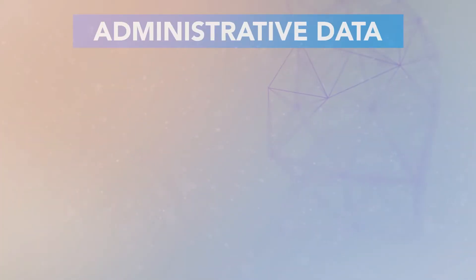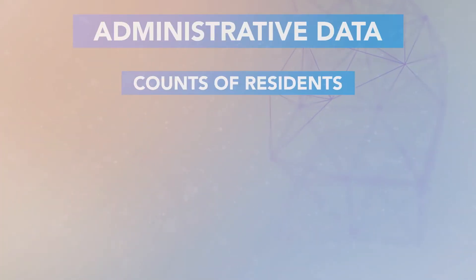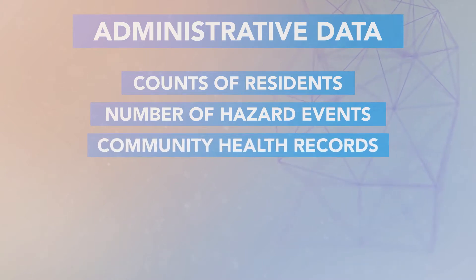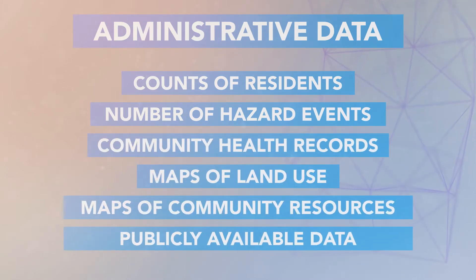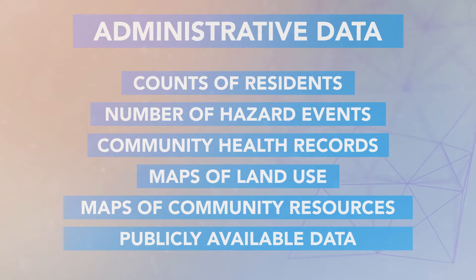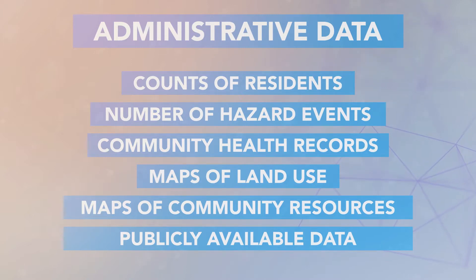There are two main sources of information needed for conducting a vulnerability assessment: community members and administrative data. Administrative data often include counts of things like residents in hazard events, community-level health records, and maps of land use and community resources. Publicly available data, such as information published by the United States Census and data available from state, regional, and local agencies, also play a critical role in helping communities assess their strengths and vulnerabilities.